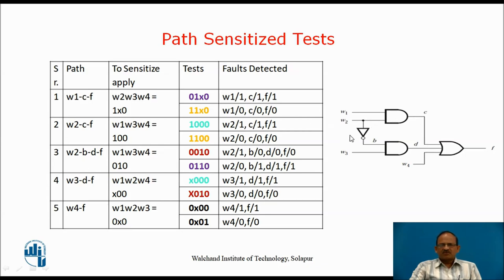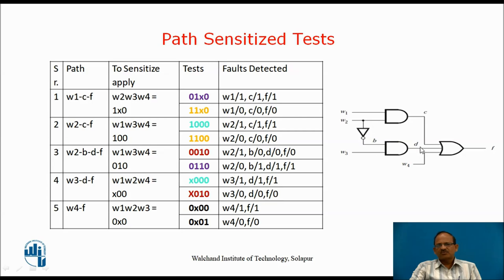For path W2, B, D, F, C must be 0 and W4 must be 0. To make C equal to 0, we set W1=0. For this path, W3 must be 1. So to activate path W2, B, D, F, we have W1, W3, W4 as 0, 1, 0. The tests 0,0,1,0 and 0,1,1,0 will determine all the faults on path W2, B, D, F.